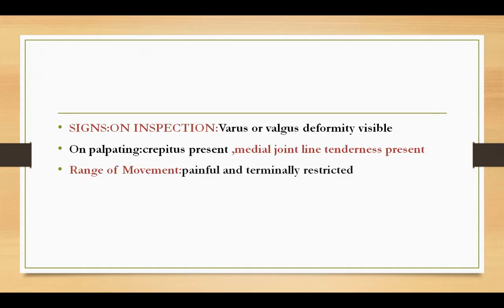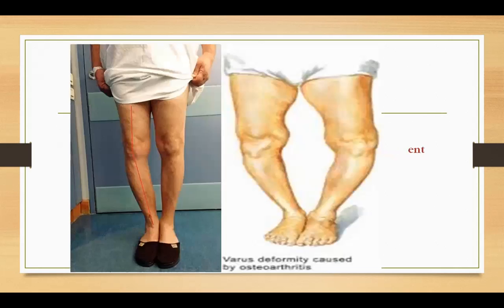On inspection there may be a varus or valgus deformity visibly. On palpation of the joint, we can notice crepitations, and there is medial joint line tenderness. During movement, movements are painful and terminally restricted.